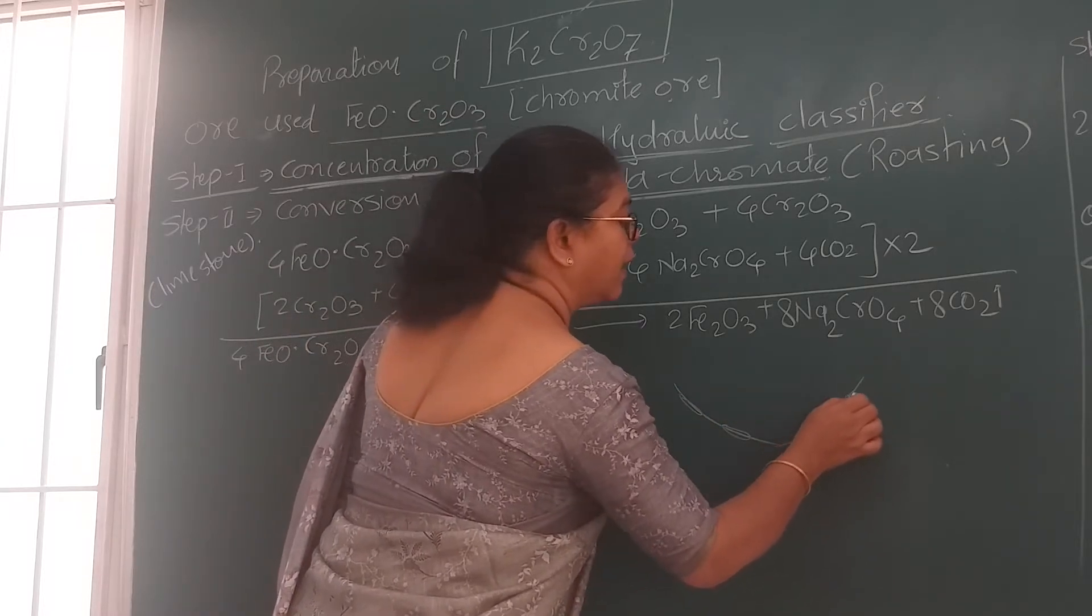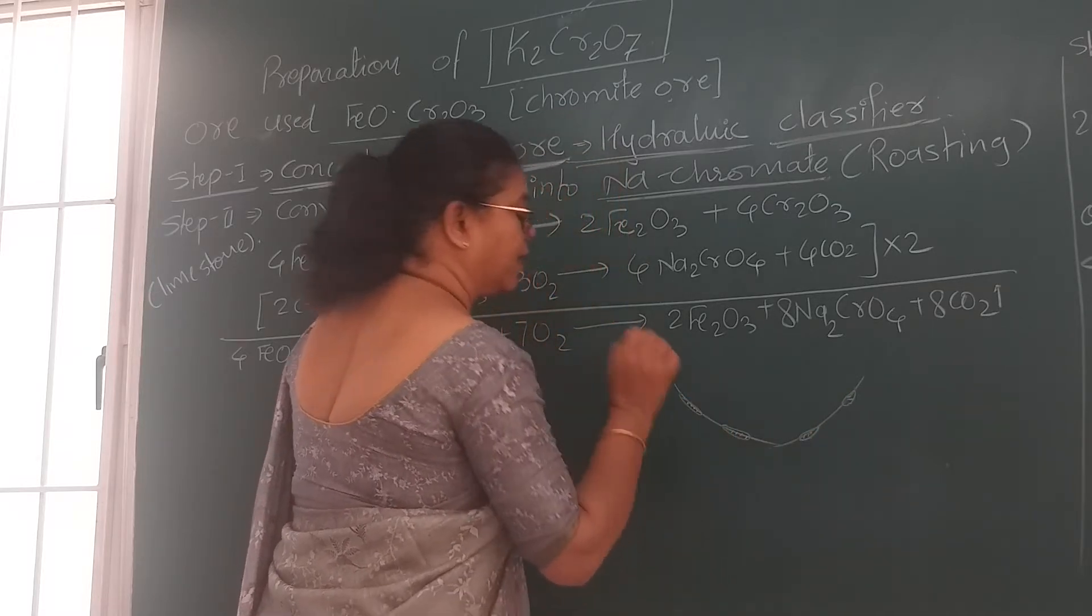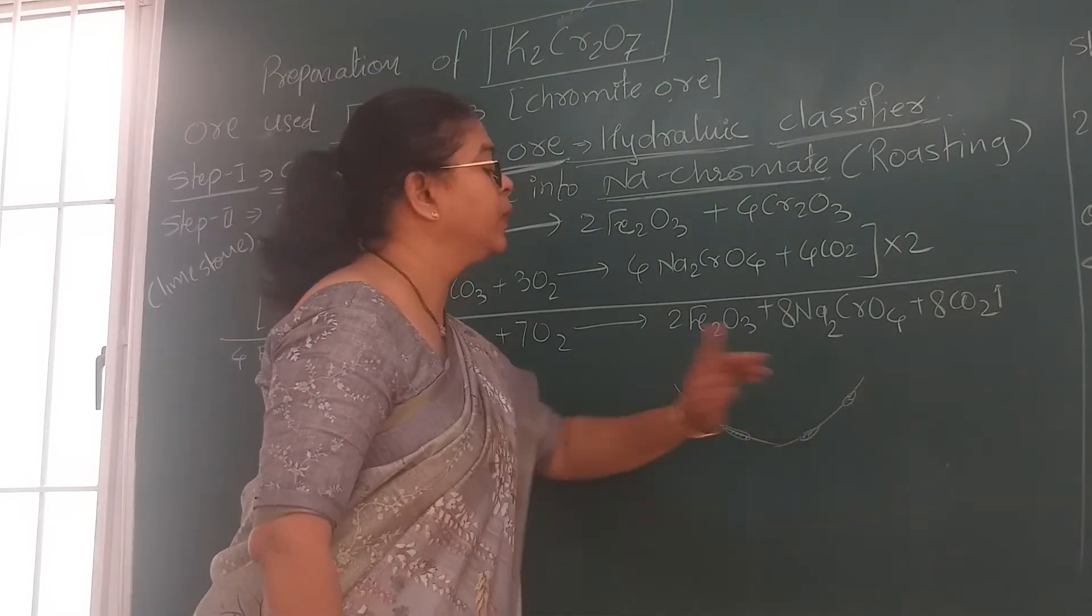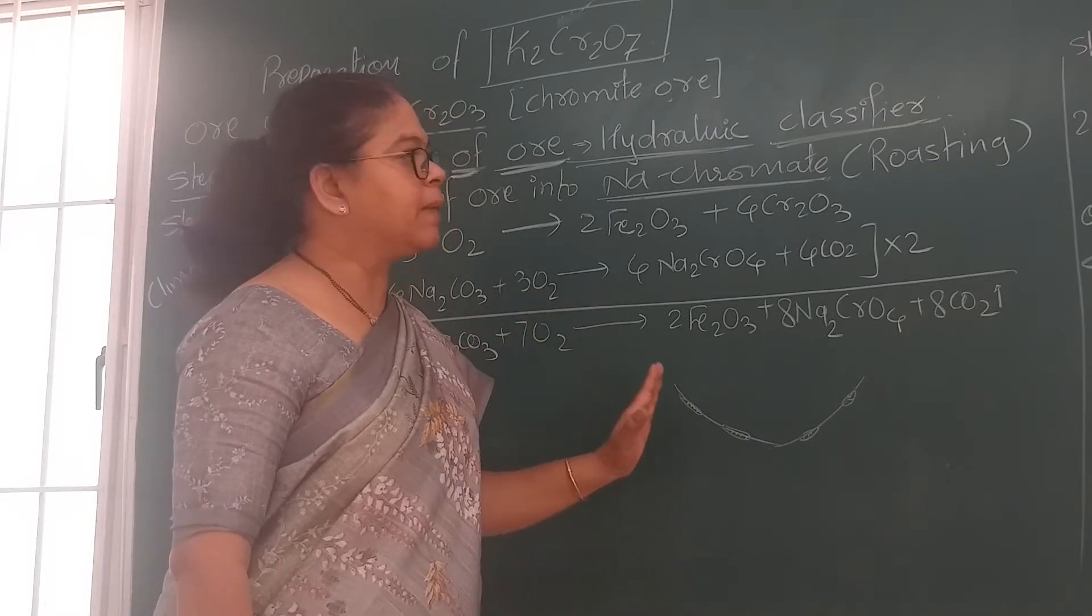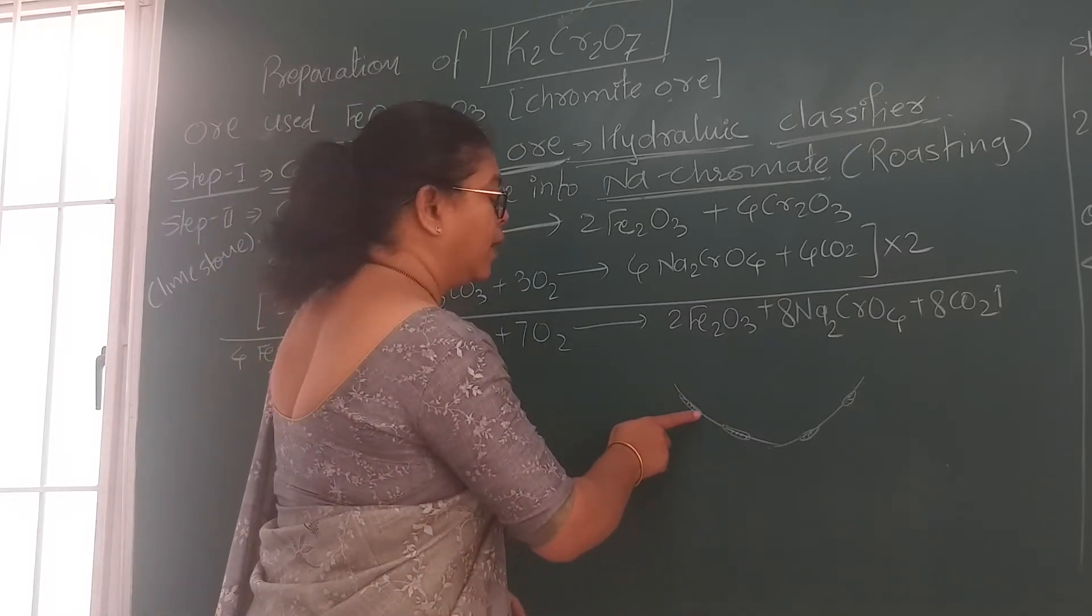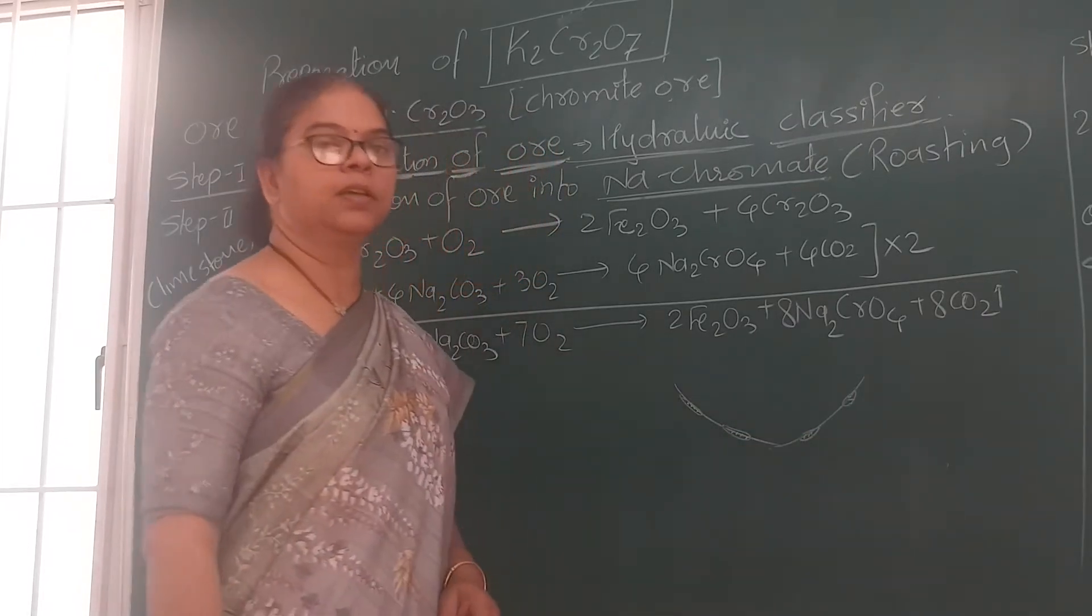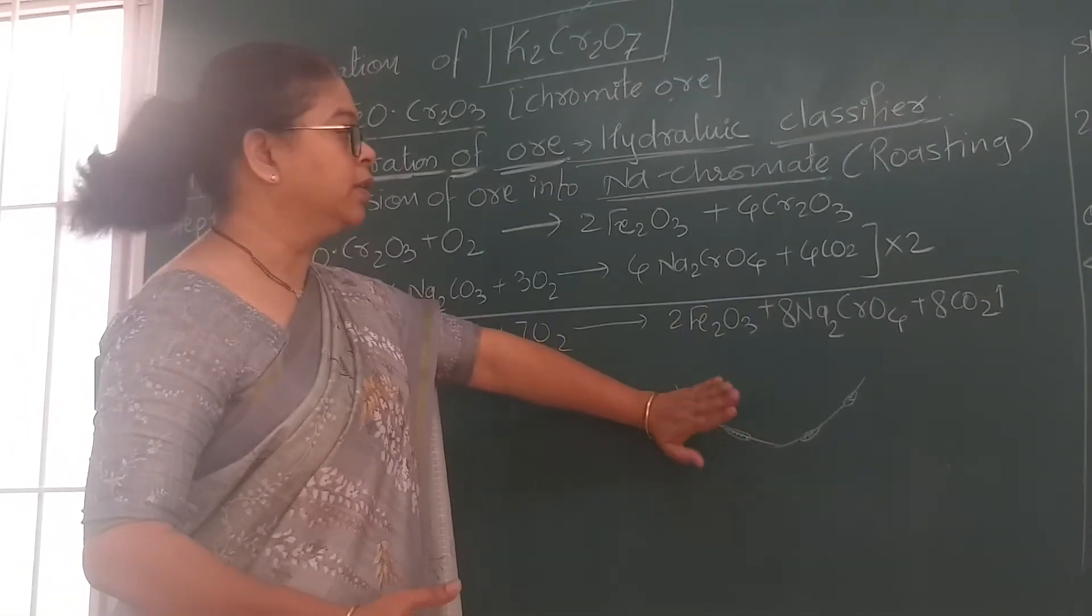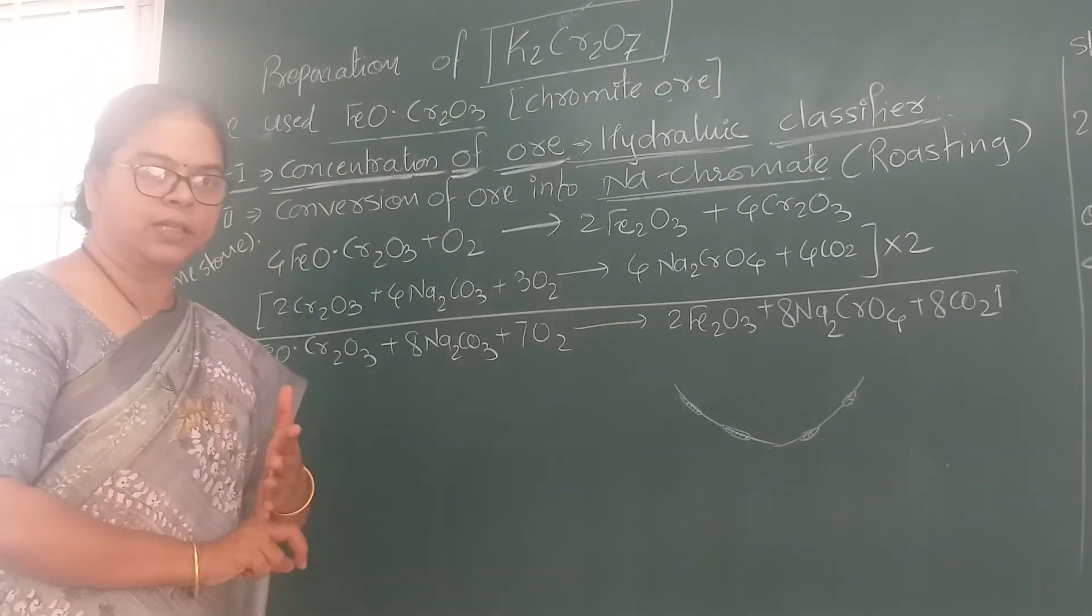This is done in reverberatory furnace. There is a container with nets and flaps. When flaps are closed you can heat the ore - this is calcination. When flaps are open, oxygen enters through these openings. In excess oxygen presence, you are heating this ore. The process is called roasting.